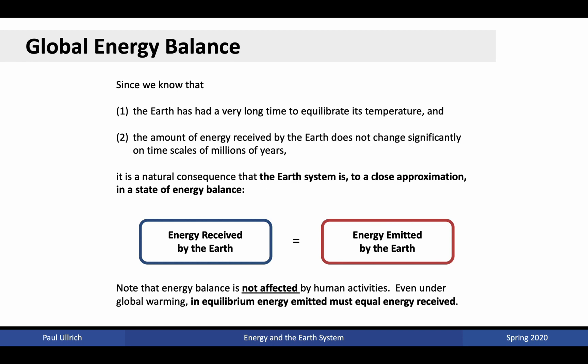Note that energy balance is not actually affected by human activities. Regardless of how much greenhouse gases we pump into the atmosphere, in equilibrium the amount of energy emitted must equal the amount of energy received. Our human activities are not changing how much energy is received by the planet. What greenhouse gas emissions do instead is change the distribution of energy in the Earth's atmosphere — which will be key later on.